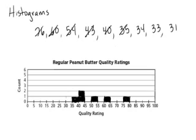34 is going to go between 30 and 35. 33 is also going to go between 30 and 35. And 31 is also going to go between 30 and 35. If I had more numbers, I would just continue doing this until I had all of my numbers placed on my histogram.